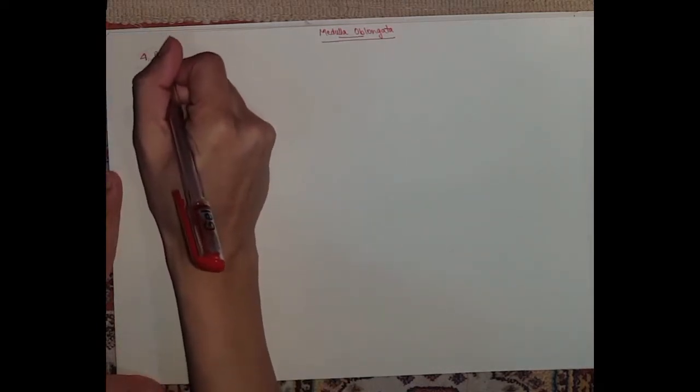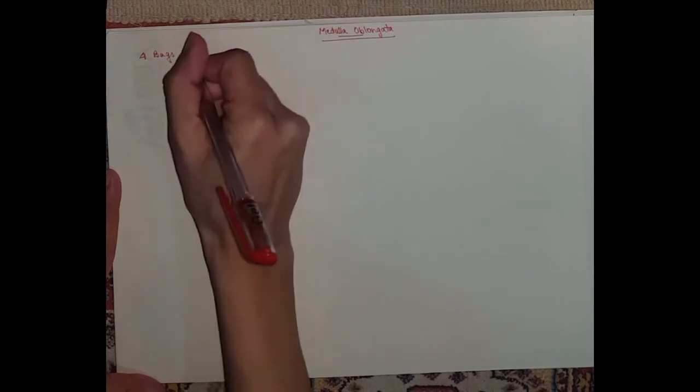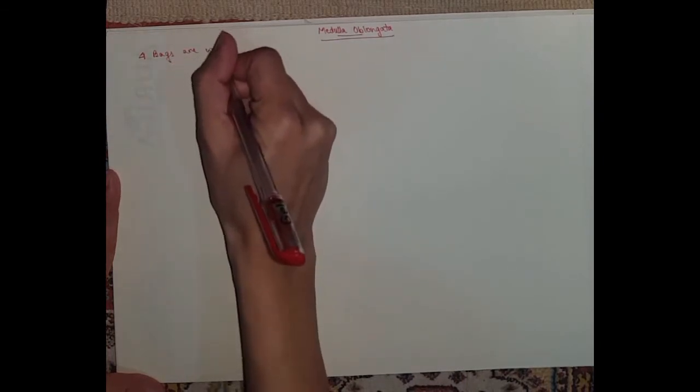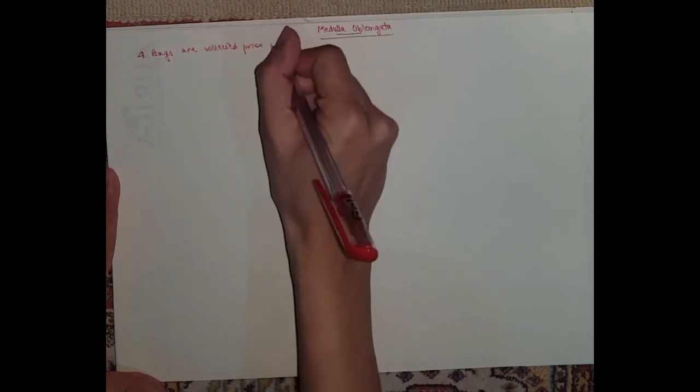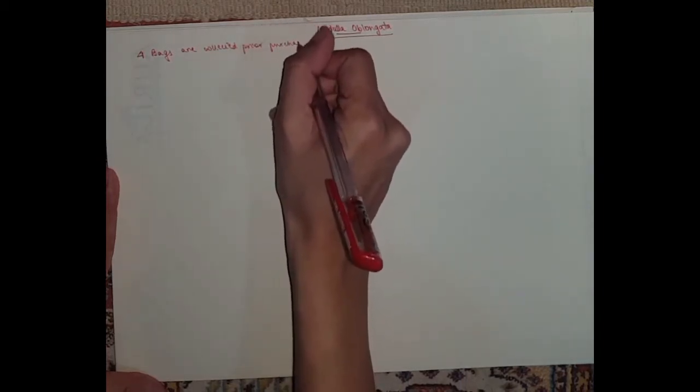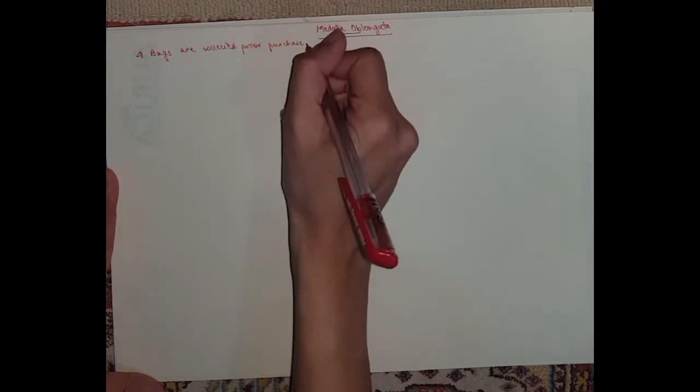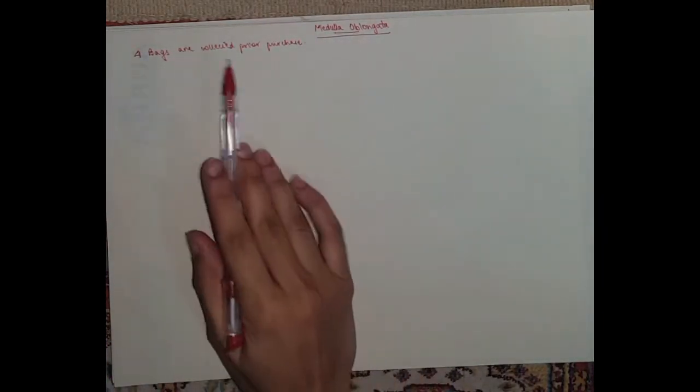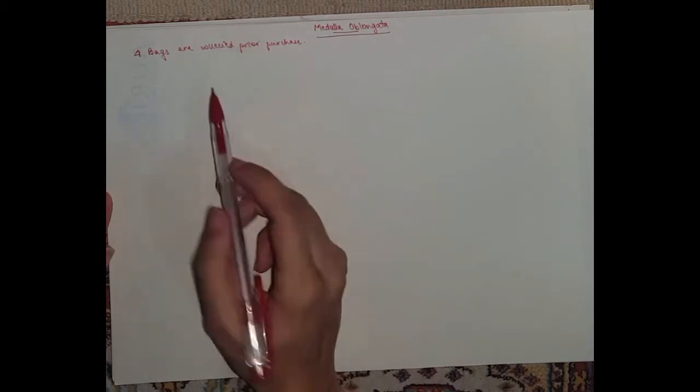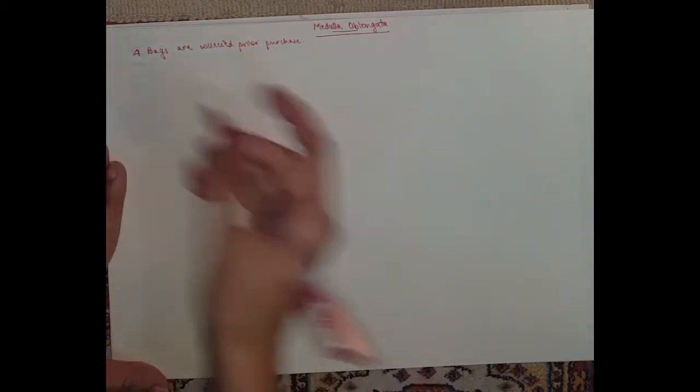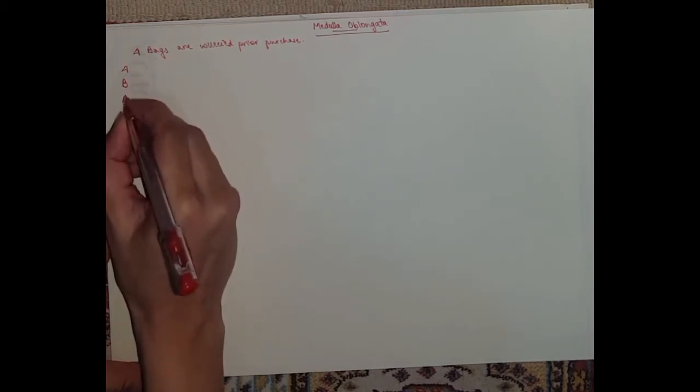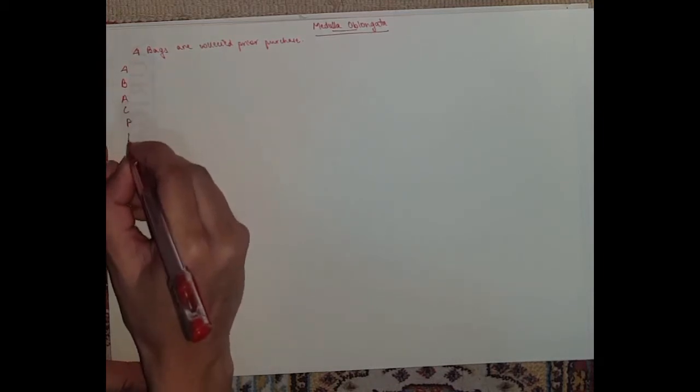So first things first, let's start with our mnemonic: four bags are collected prior purchase. The medulla oblongata is a very heavy topic, so you need four bags to be collected before you progress. Alright, so let's write the letters down: B, A, C, P, P.